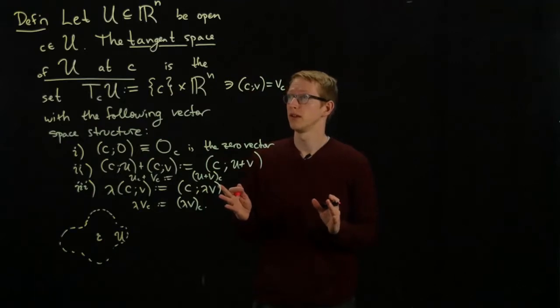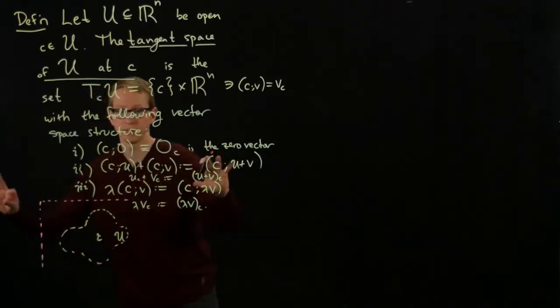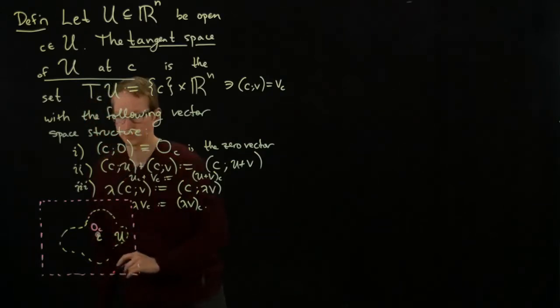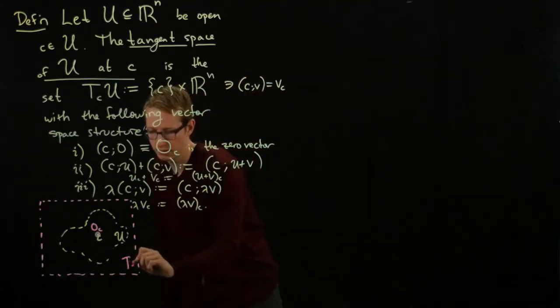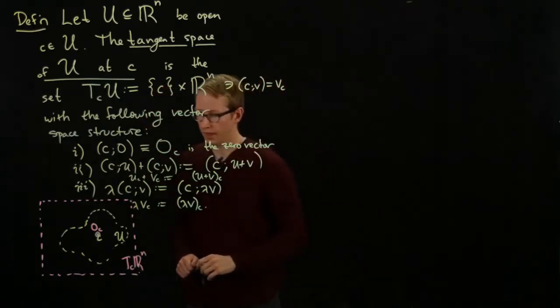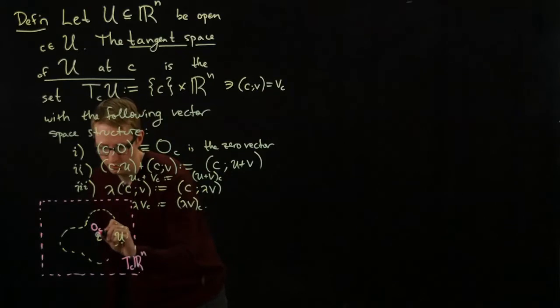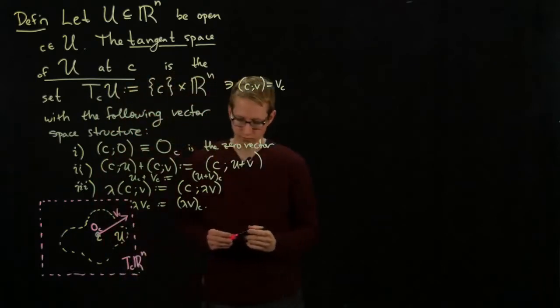The tangent space of U at this point c is the entire plane. I'm drawing it as dashed because I mean to extend this plane out to infinity in both directions. It's the entire plane whose origin is at c. So we overlay on this open set an entire plane, and that plane here is TcRn. In this case, n equals 2. When we think of a vector in this tangent space, we imagine that this vector emanates from that origin. So this looks like v_c, for instance.